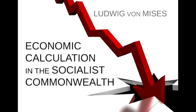In the narrow confines of a closed household economy, it is possible throughout to review the process of production from beginning to end and to judge all the time whether one or another mode of procedure yields more consumable goods. This, however, is no longer possible in the incomparably more involved circumstances of our own social economy. It will be evident even in the socialist society that 1,000 hectolitres of wine are better than 800, and it is not difficult to decide whether it desires 1,000 hectolitres of wine rather than 500 of oil. There is no need for any system of calculation to establish this fact. The deciding element is the will of the economic subjects involved. But once this decision has been taken, the real task of rational economic direction only commences, i.e., economically, to place the means at the service of the end. That can only be done with some kind of economic calculation. The human mind cannot orientate itself properly among the bewildering mass of intermediate products and potentialities of production without such aid.